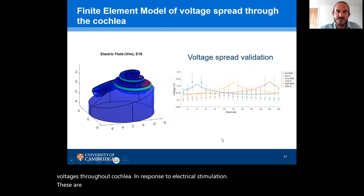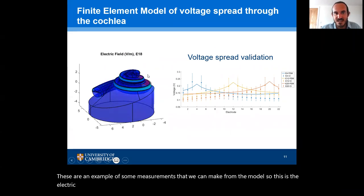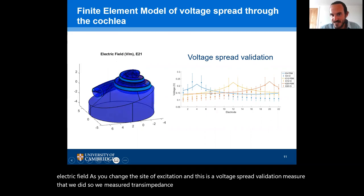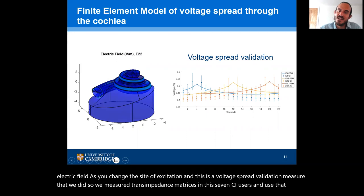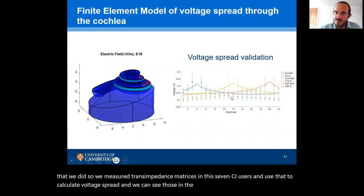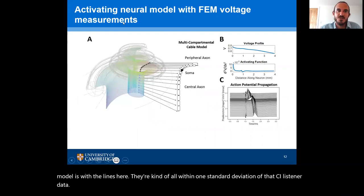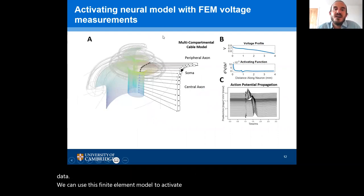These are some example measurements that we can make from the model — the electric field as you change the site of excitation. This is a voltage spread validation measure: we measured trans-impedance matrices in seven CI users and used that to calculate voltage spread. We can see those in the dots and error bars, and our model lines are all within one standard deviation of that CI listener data. We can use this finite element model to activate a neural model using the voltages extracted from the model.